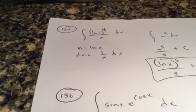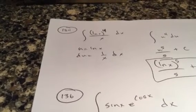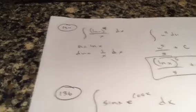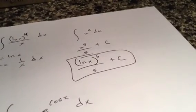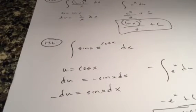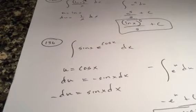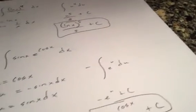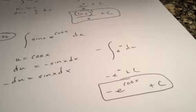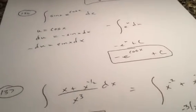Let u be natural log of x. du is 1 over x dx. That's what we get there. Let u be cosine x. So du is negative sine x dx. So negative du is sine x. We get e to the u. That's just going to be negative e to the u plus c. And then plug in cosine x for u.